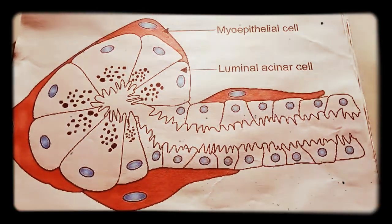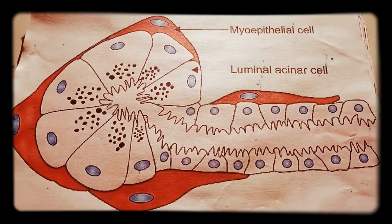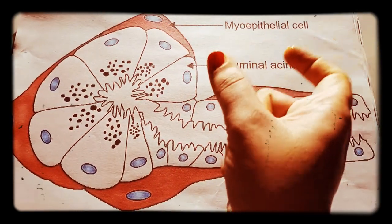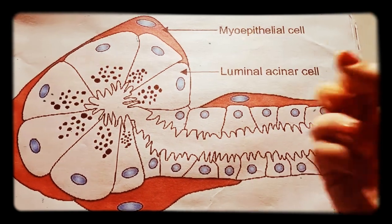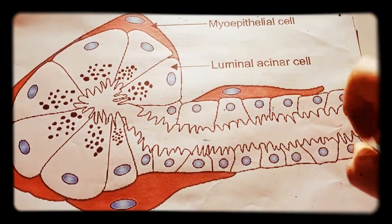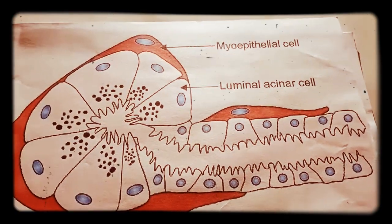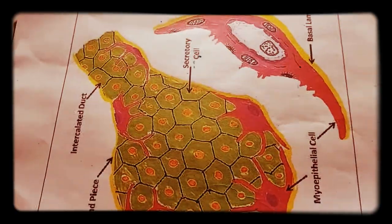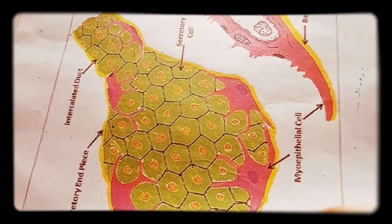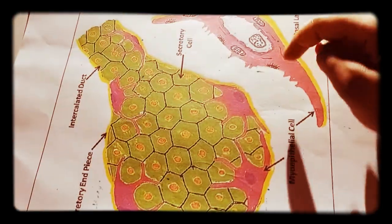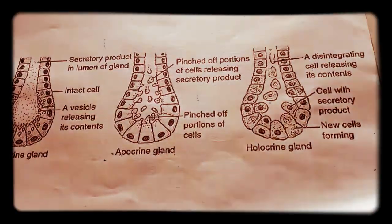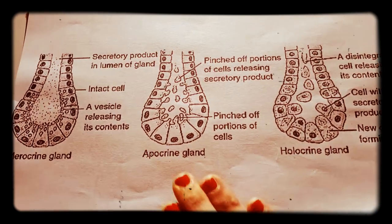In the exocrine gland, under the basement membrane and beneath the secretory unit, there is a star-shaped cell called the myoepithelial cell. 'Myo' comes from muscle, and this cell's ability helps to expel secretions out through the duct. As shown in the diagram, this is the basal lamina, and the myoepithelial cell is in pink color surrounding the secretory end piece.